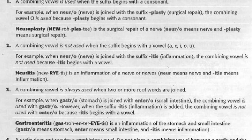Rule two: a combining vowel is not used when the suffix begins with a vowel. The suffix -itis means inflammation. For the same word root neur/neuro meaning nerve — since -itis begins with a vowel, you drop the combining vowel. So instead of neuroitis, your actual medical term is neuritis, meaning inflammation of a nerve.